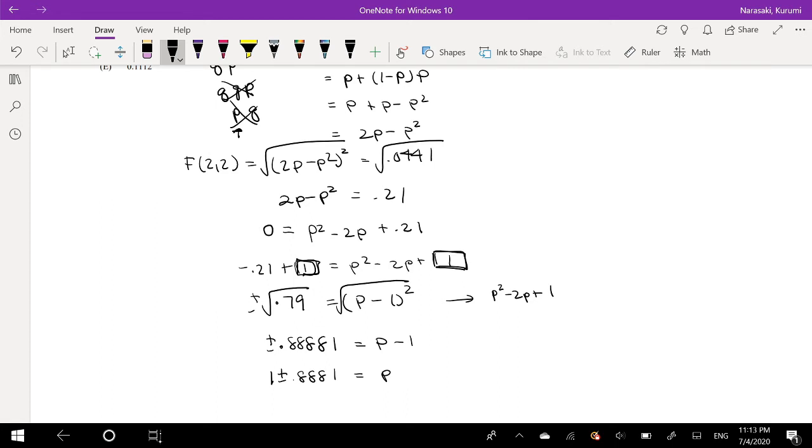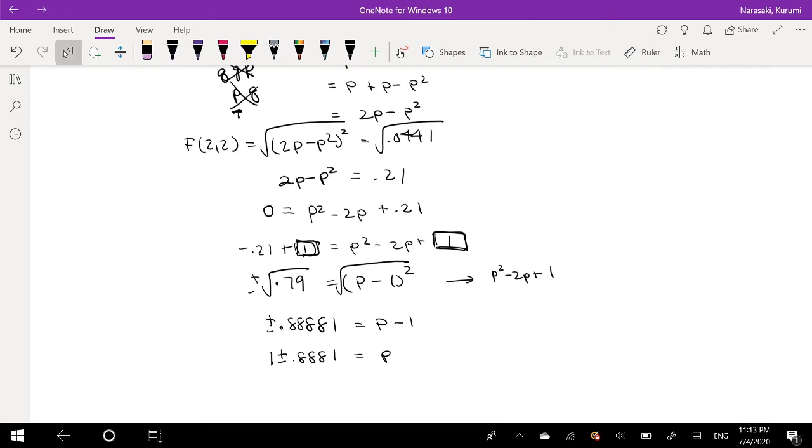Well, we know that probability can't exceed 1, so we can eliminate the 1 plus side. So then our probability is going to be 1 minus 0.8881, which is equal to, delete,